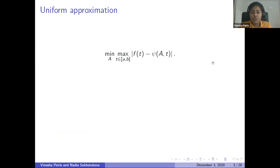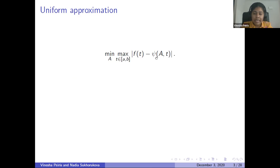I'll start off with uniform approximations. In uniform approximation, we try to minimize the maximum deviation of the approximation from the original function. This is the formulation for a general uniform approximation problem. We have our original function f(t), which is univariate, and psi(A, t) is our approximation. Capital A consists of the decision variables. We are looking for the set of decision variables that gives us the best approximation in the uniform sense — minimizing the worst error.